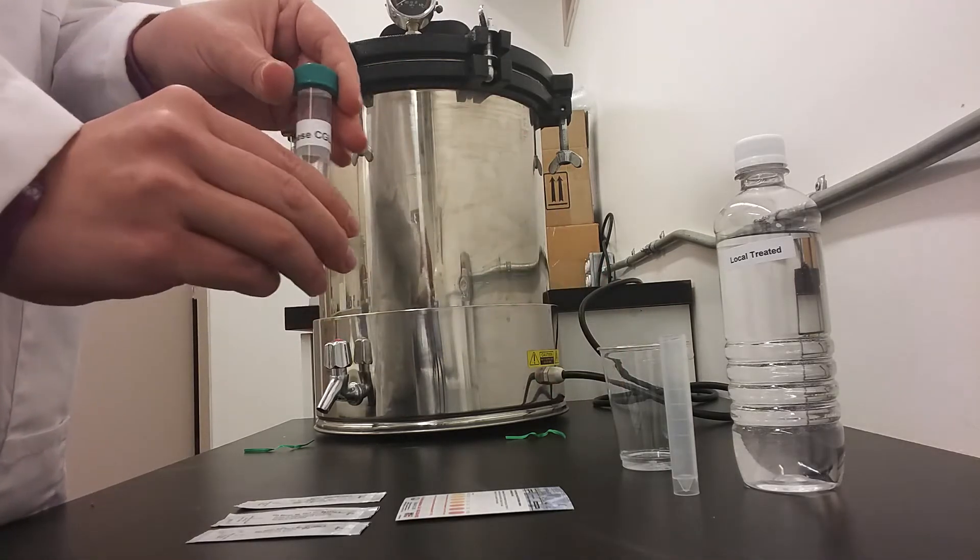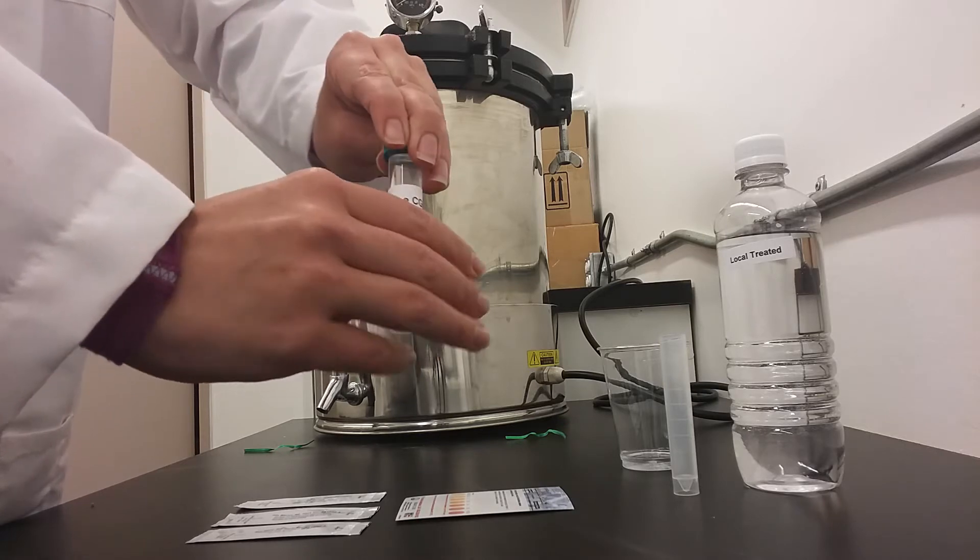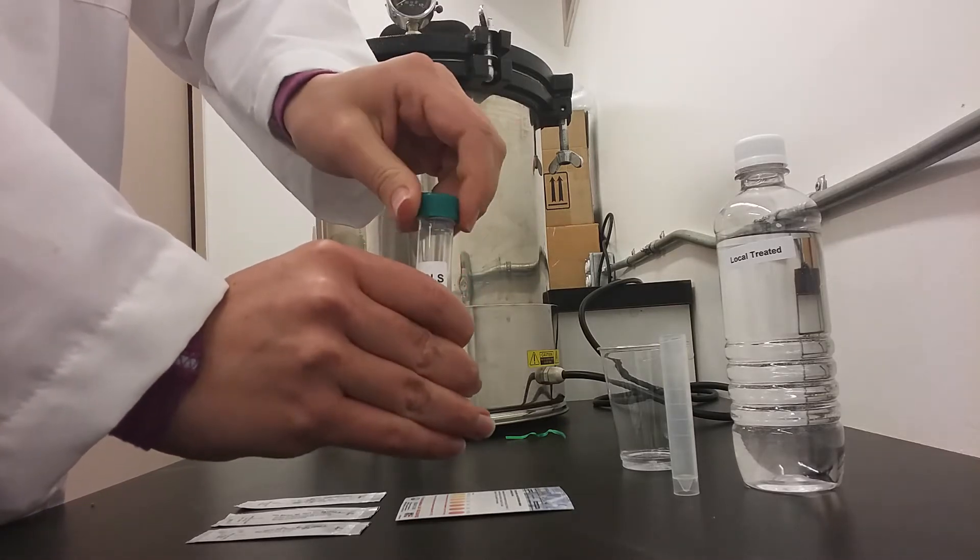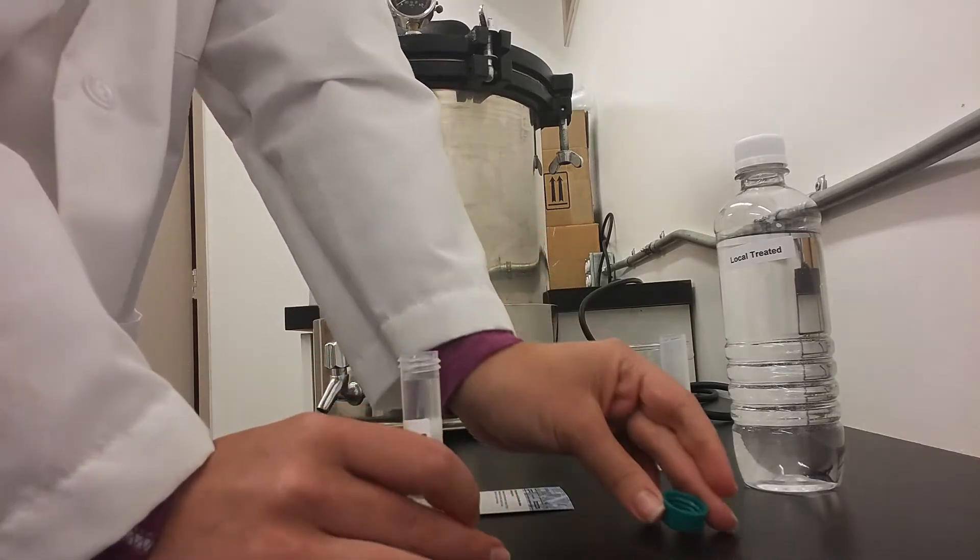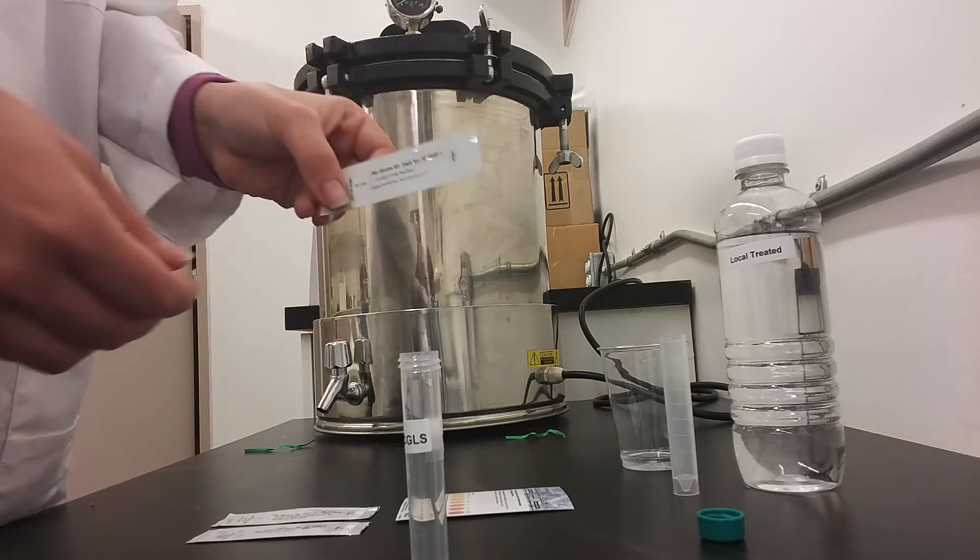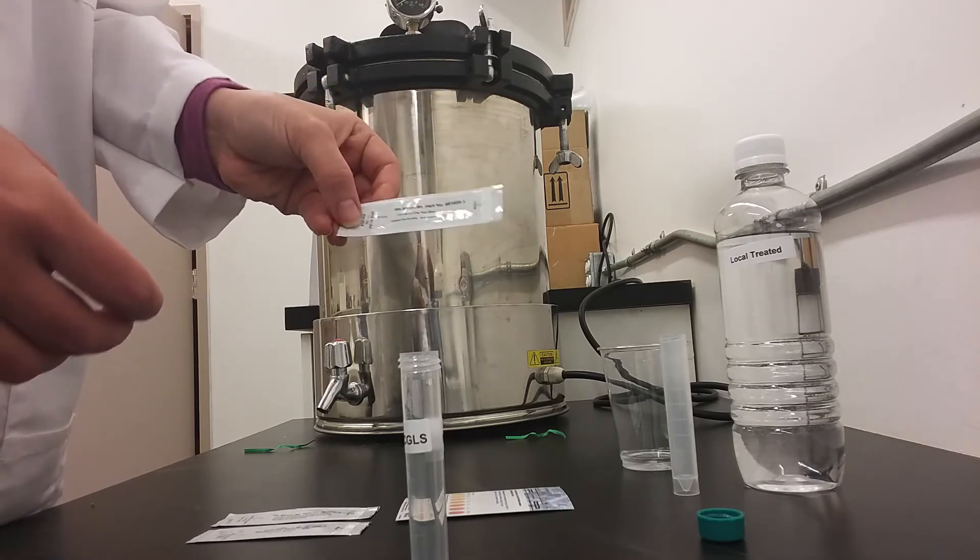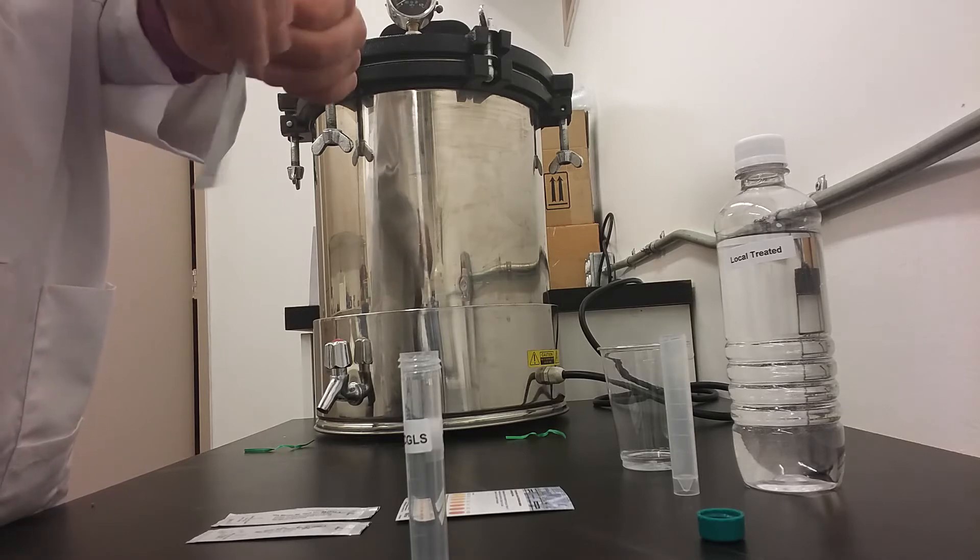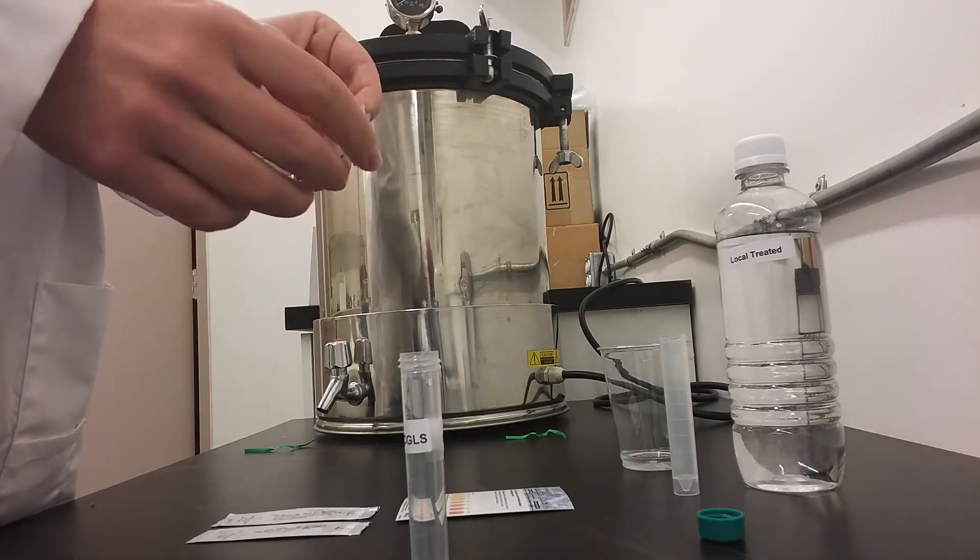The first step is to open the vial of manganese test water. Next you will take manganese strip part 1, opening it carefully from the side that says open.